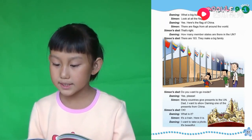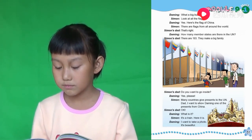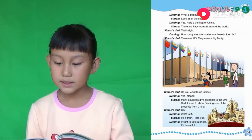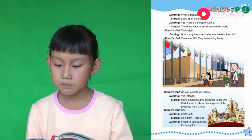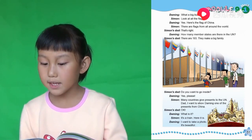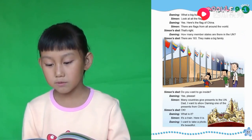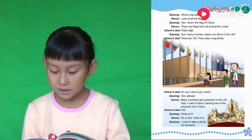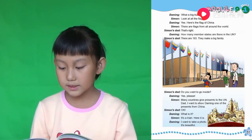How many member states are there in the UN? 联合国有多少个成员国? There are 193. 这儿有一百九十三个. They make a big family. 他们组成个大家庭. Do you want to go inside? 您想不想进去? Yes, please. 是的,我想.